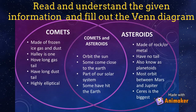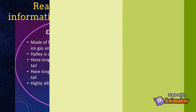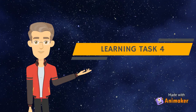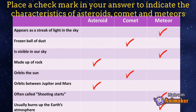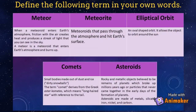Learning Task Number 3: Read and understand the given information and fill out the Venn diagram. Place a check mark in your answer to indicate the characteristics of asteroids, comets, and meteors. Then define the following terms in your own words.